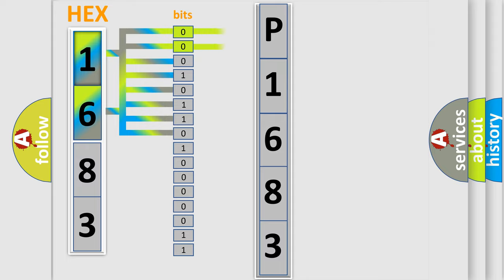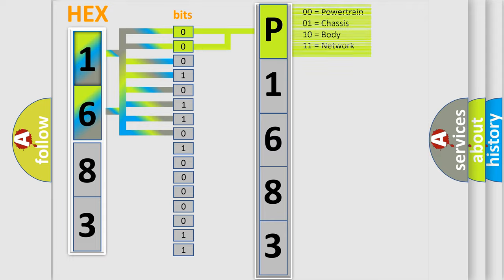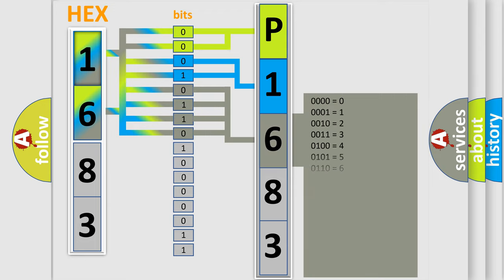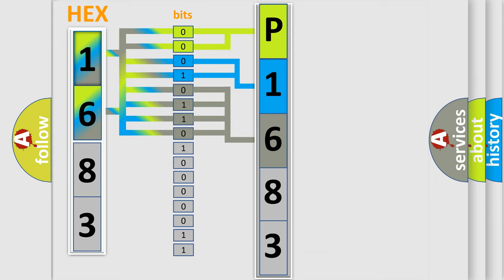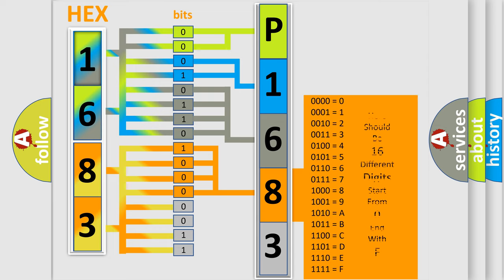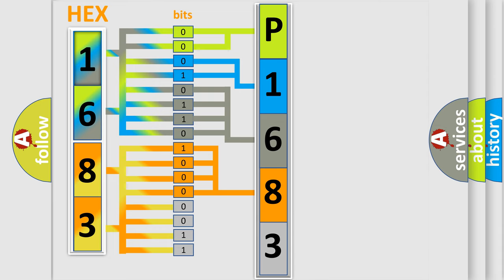By combining the first two bits, the basic character of the error code is expressed. The next two bits again determine the second character. The last bits of the first byte define the third character of the code. The second byte is composed of a combination of eight bits. The first four bits determine the fourth character of the code, and the combination of the last four bits defines the fifth character. A single byte conceals 256 possible combinations.